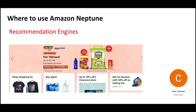One of the significant use cases of Amazon Neptune is the recommendation engine. This is a very important topic for clearing the SAA-C03 certification. You know when you go to amazon.com, you shop, and when you are almost done and about to pay, a pop-up comes saying people who bought a brush also bought a toothpaste and so on. Those are recommendations coming from recommendation engines.